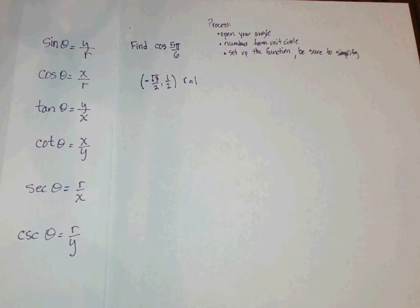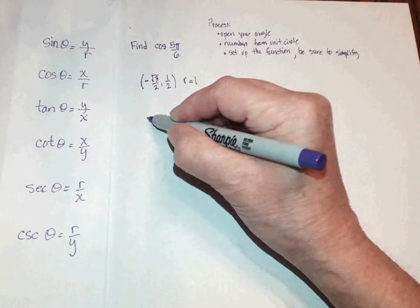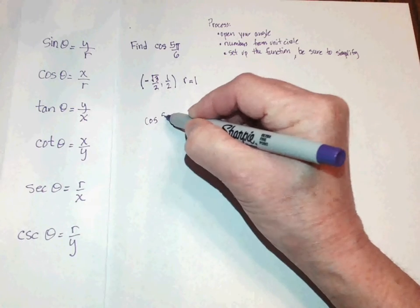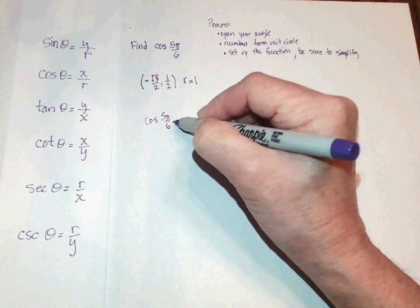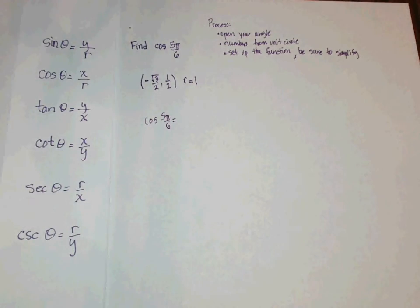We're now ready to set up the function. If you look at your definition list, you can see that the cosine of any angle equals your x over your r.